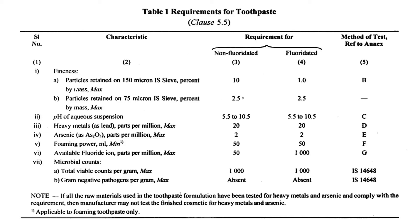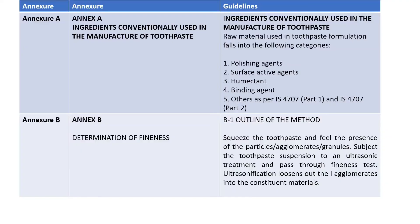Available fluoride ions in parts per million should be 50 in case of non-fluoridated and 1000 in case of fluoridated toothpaste. The total microbial count specification requires that total viable counts per gram should not exceed a maximum of 1000 as per Indian Standard 146. For gram-negative pathogens per gram, the maximum limit is that they should not be present at all — there should be complete absence of gram-negative pathogens per gram. In the case of skin cream a certain level was permitted, but for an oral product like toothpaste it is not acceptable at all, since skin creams work on the epidermis area.